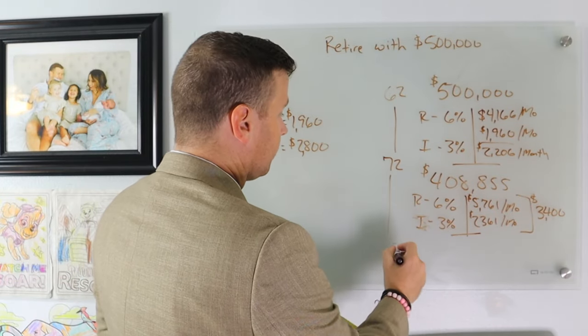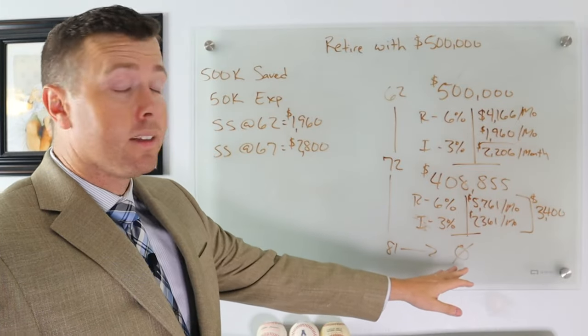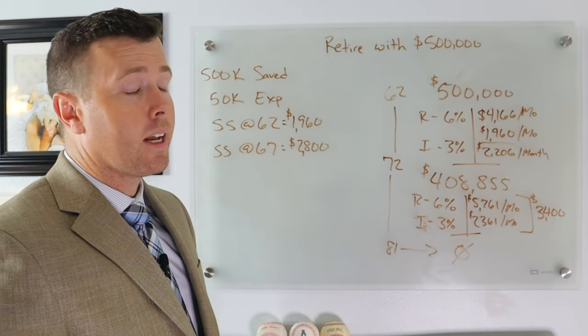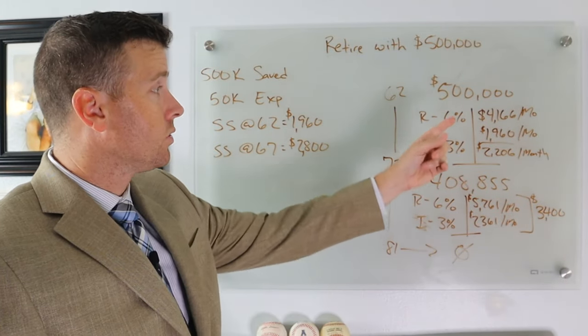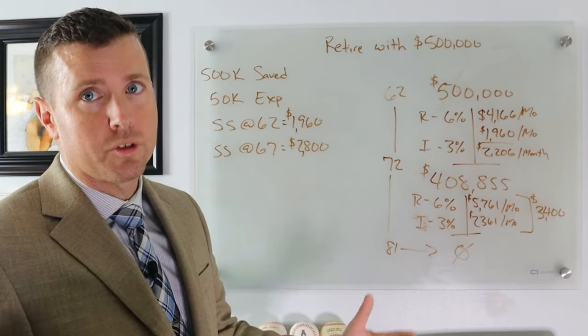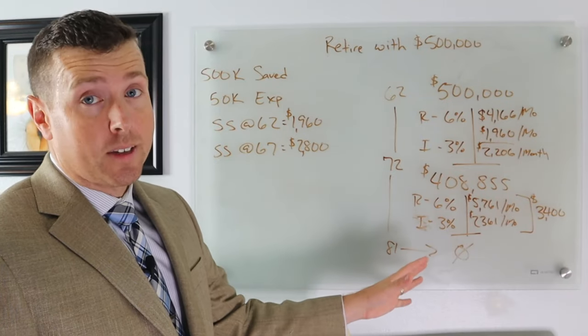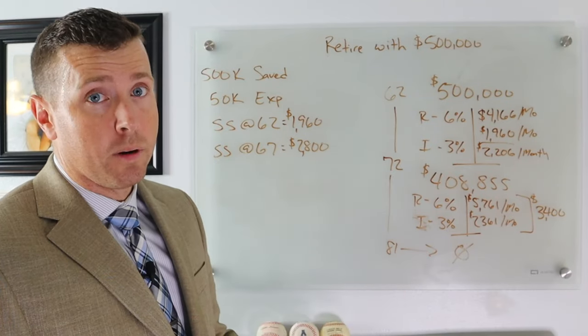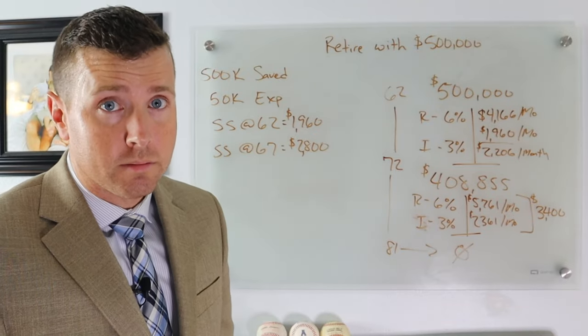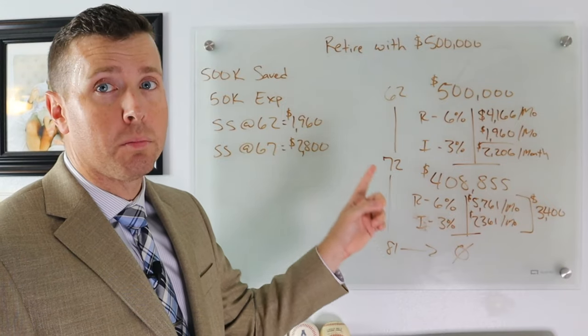At 81, we're at zero. We run out of money in this scenario. I've saved $500,000 for retirement, I'm 62 years old, I want $50,000 a year with Social Security and everything included - we're out of money at 81. That's tough. You still have Social Security, maybe you have a house, but you have no more spendable assets.